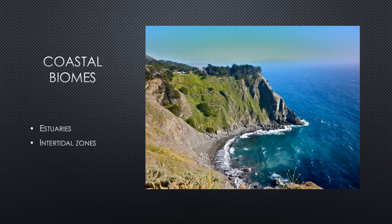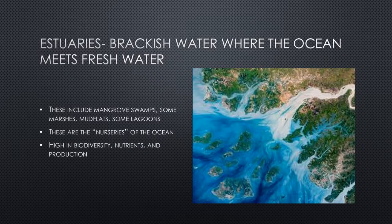Now moving on to coastal biomes. We want to look at estuaries and intertidal zones. Estuaries have that brackish water — a mixture of salt and fresh water — where the ocean meets rivers. These include mangrove swamps, some marshes, mud flats, and lagoons.